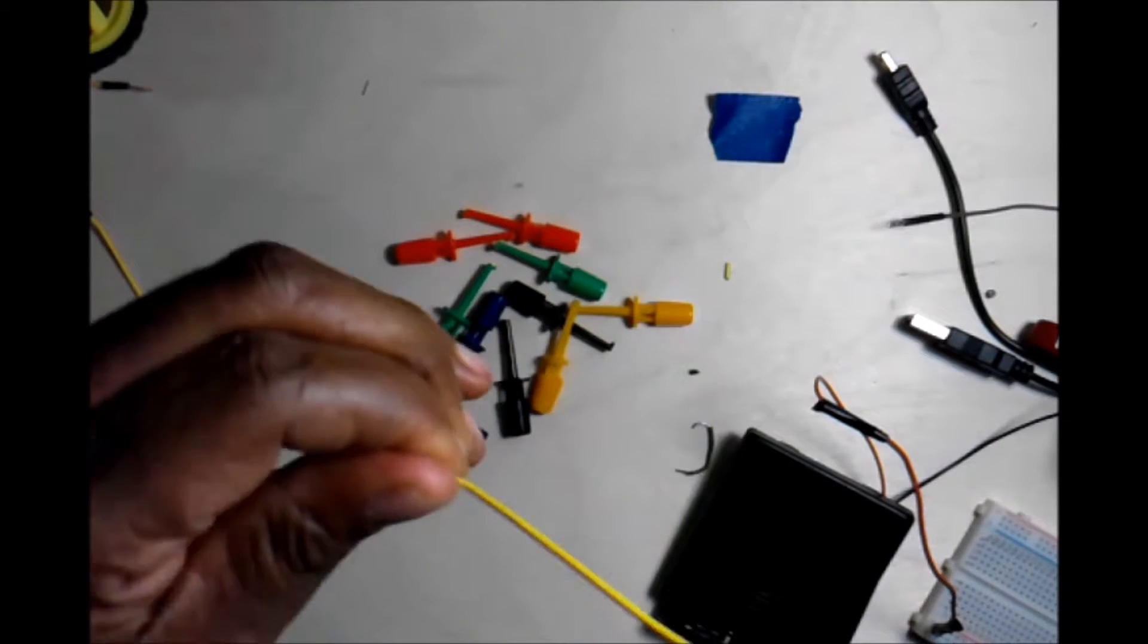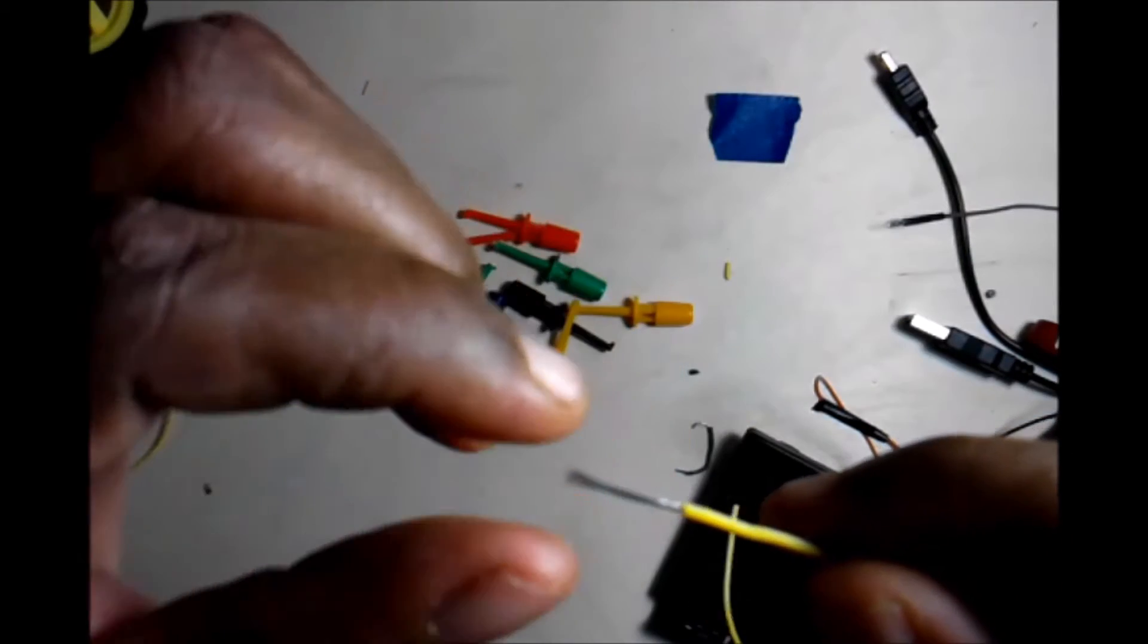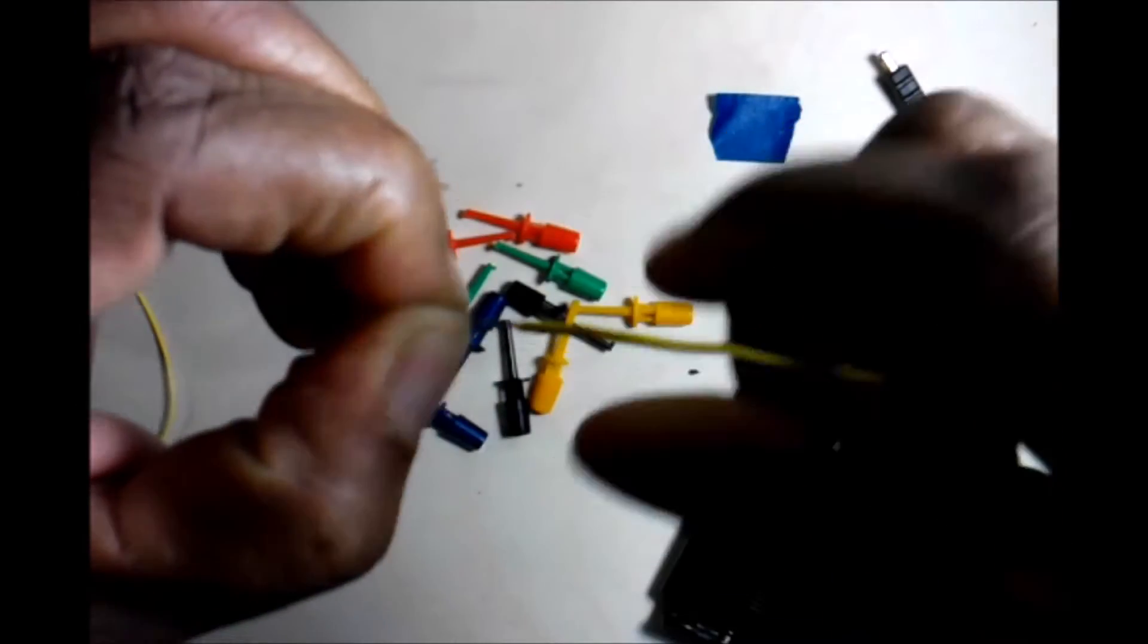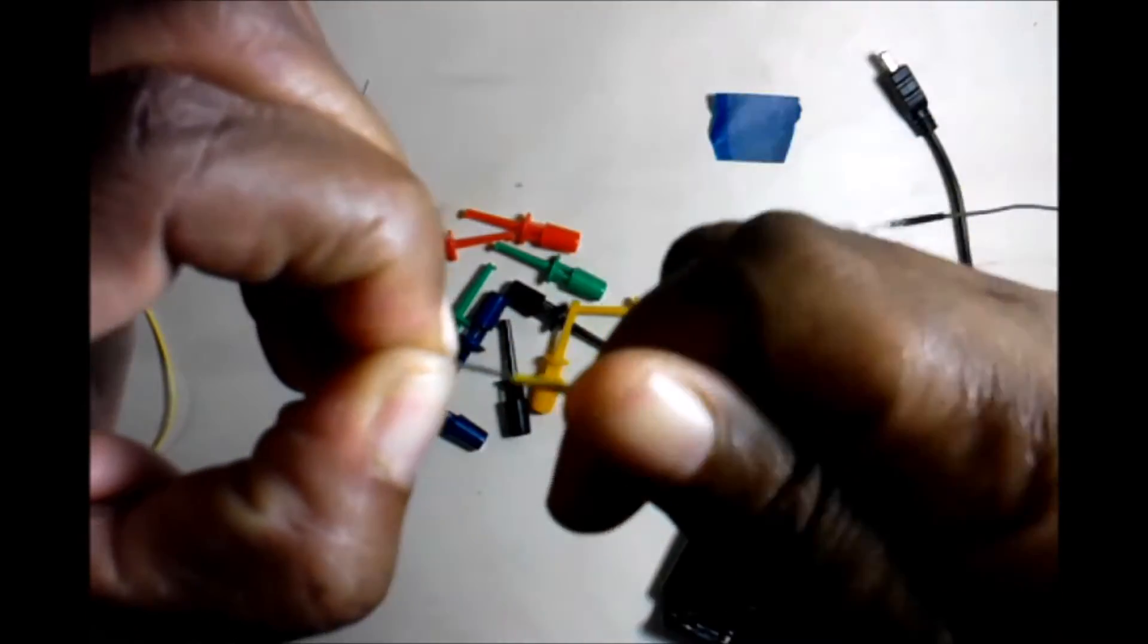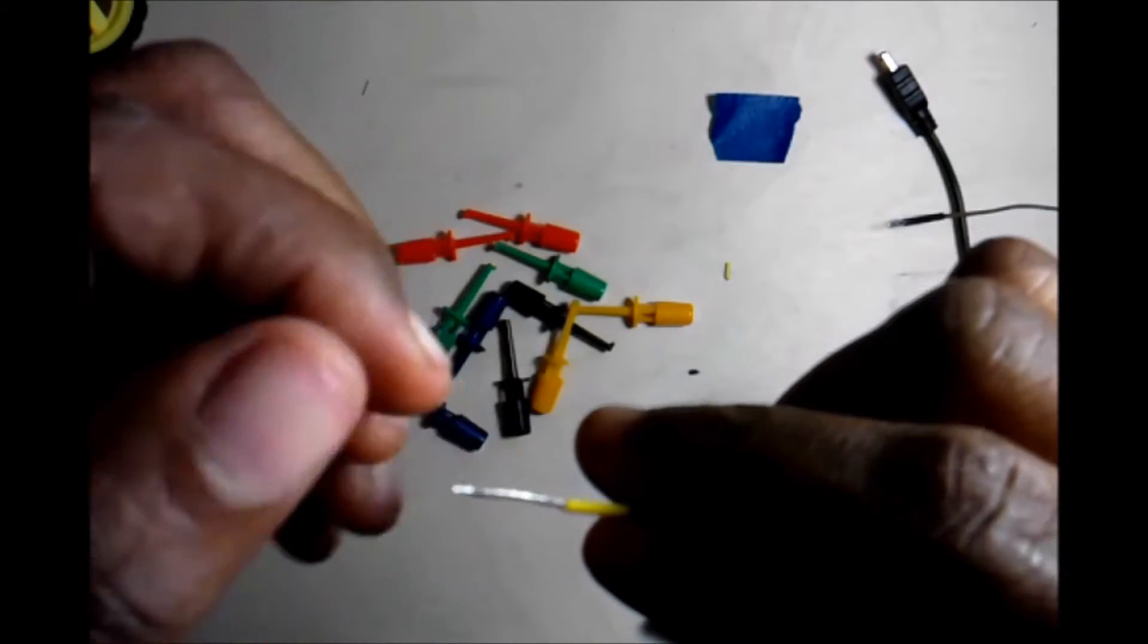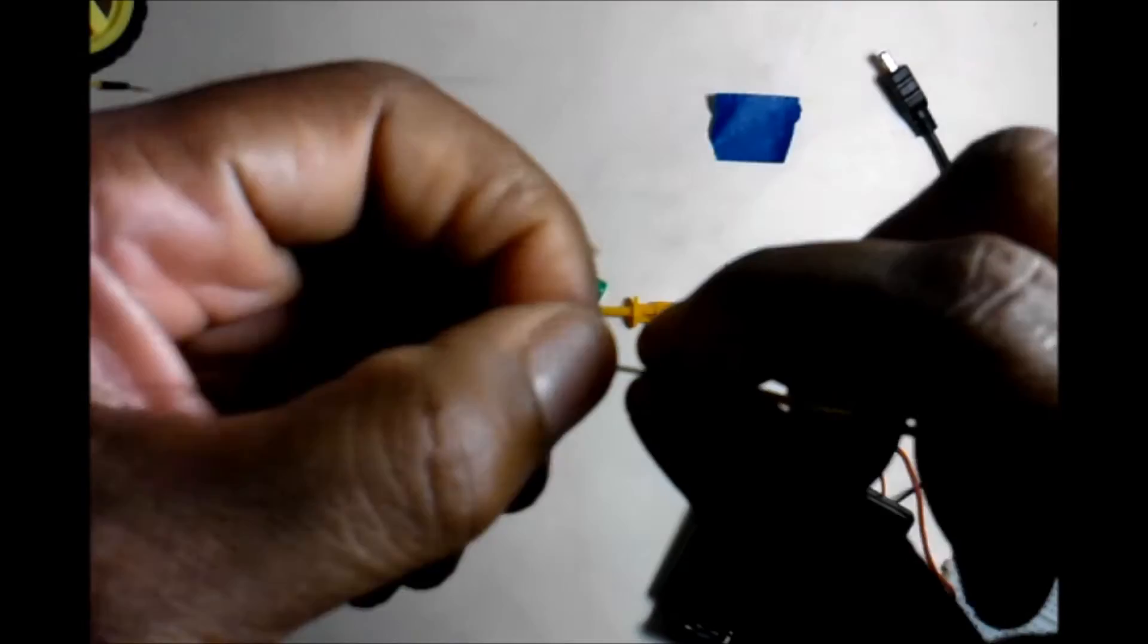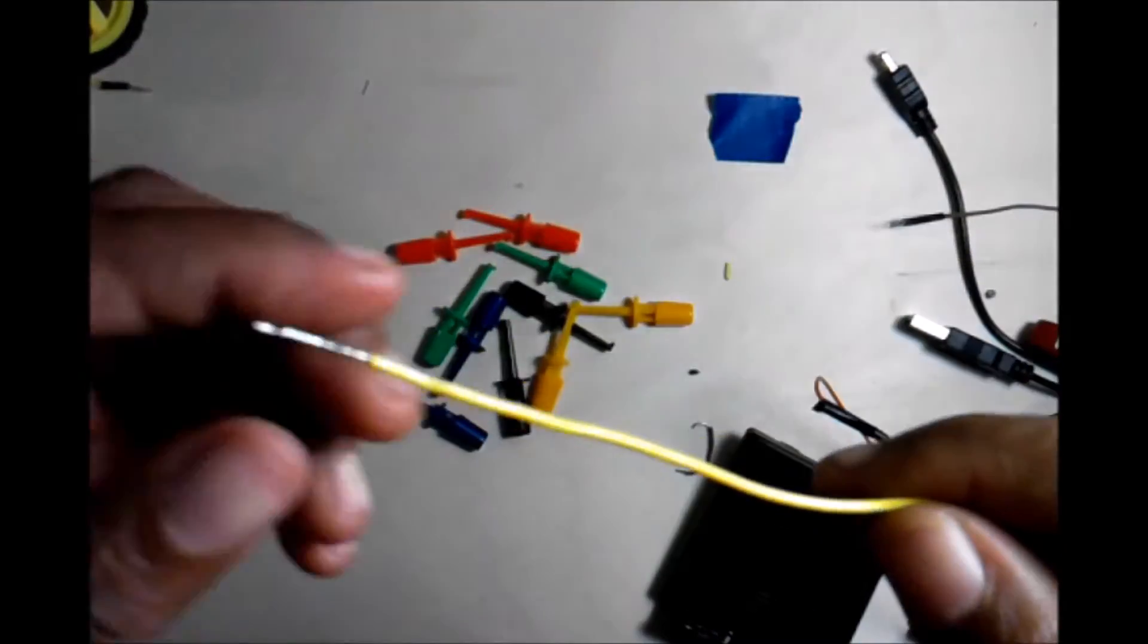What I do is I grab the end right here and then I just start twisting it. Just twist the insulated piece and that twists the wire pretty good. Once it's twisted on there real good, I might try to twist up the end a little bit. Now that's twisted.